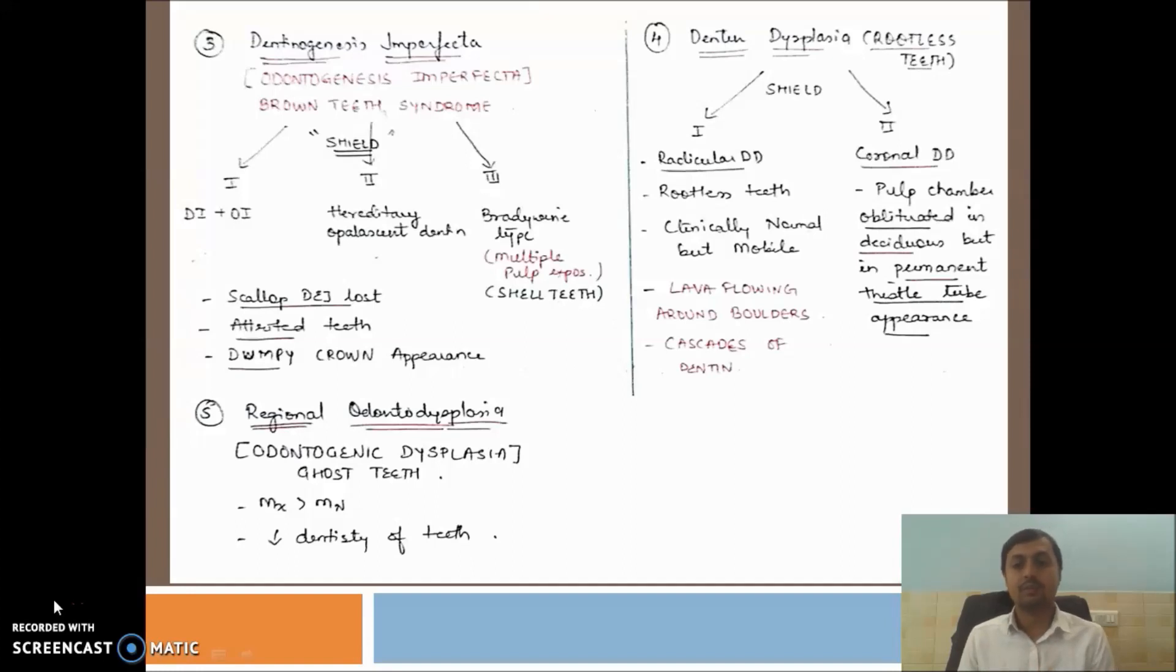Some common features for hereditary opalescent teeth: scalloped DEJ, teeth will be discolored, and there will be a bulbous crown appearance of the tooth.